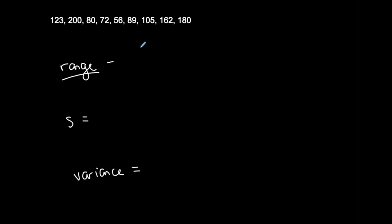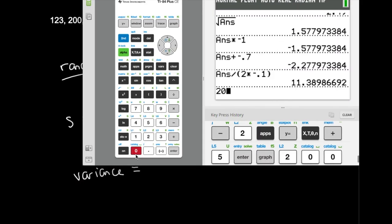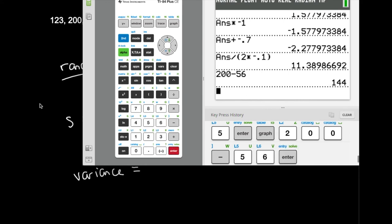So the range is very simple. Let's just start there. The range is the highest value, so the maximum value, which looks like 200, minus the minimum value. What's the smallest value? I think 56 is the smallest value, which equals, so as simple as that, 200 minus 56 is your range for this case. So 144 is my range.